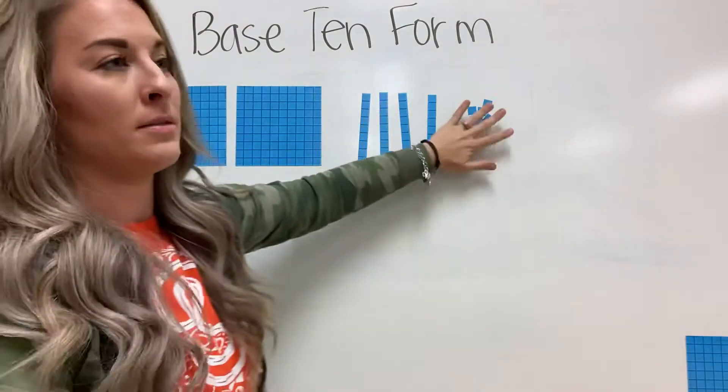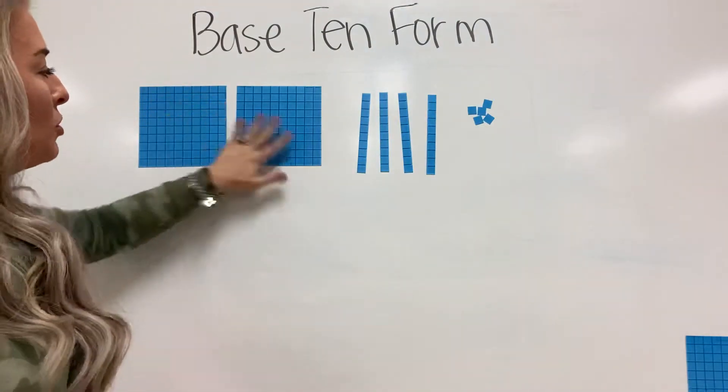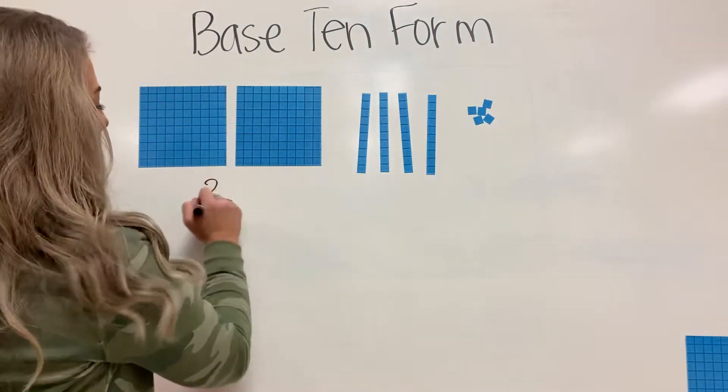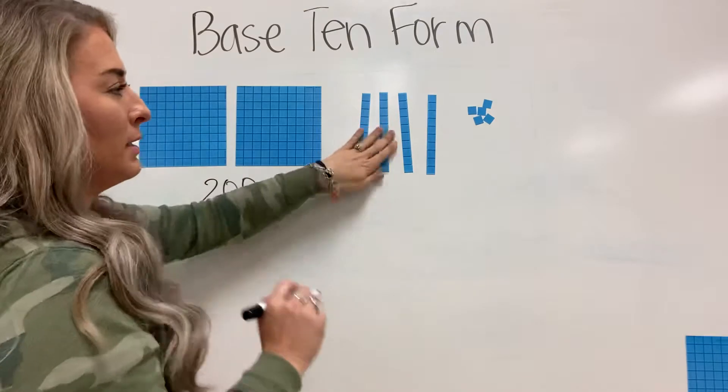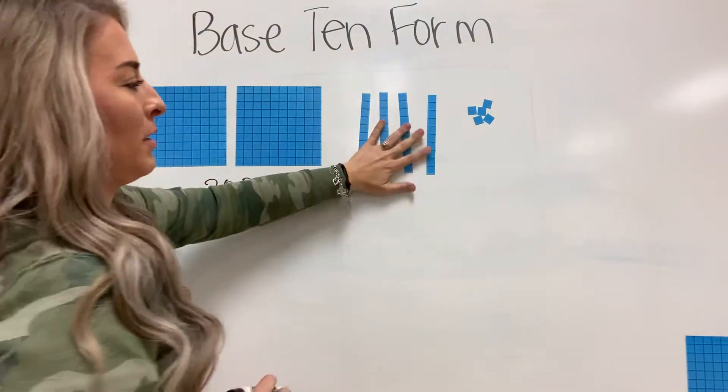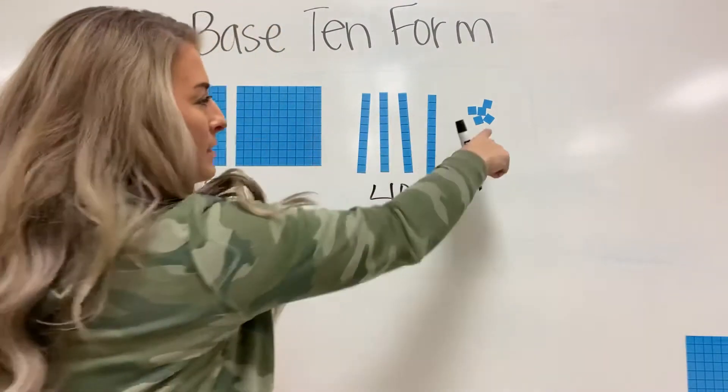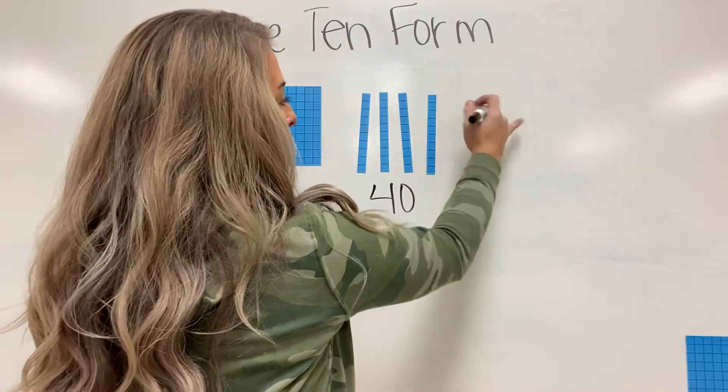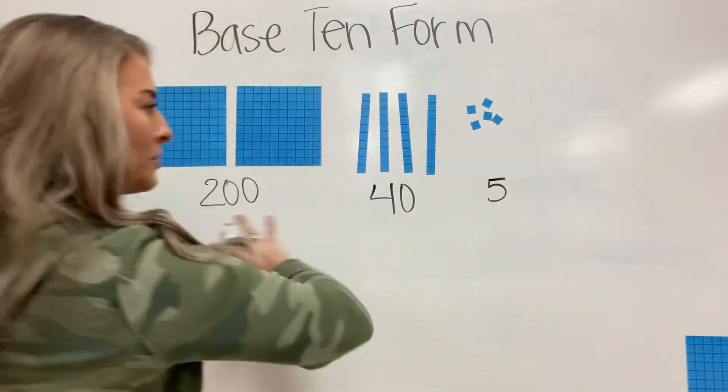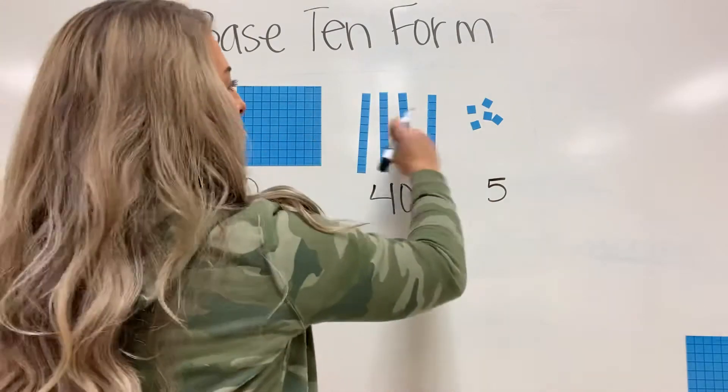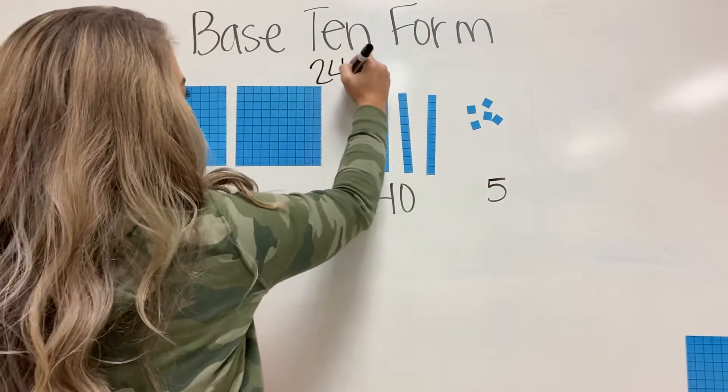These are your hundreds, tens, and ones. Since I have two hundreds, the value of these blocks is 200. Since I have four tens, the value is 40. And since I have five ones, the value is five. So in all, my base 10 form is showing me the value of 245.